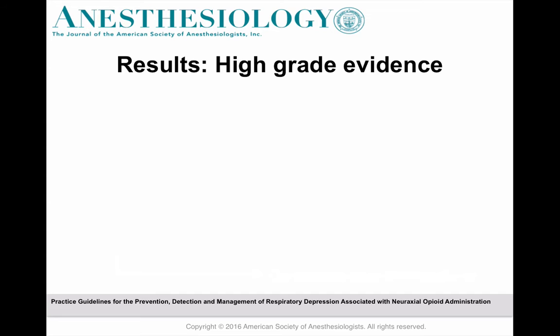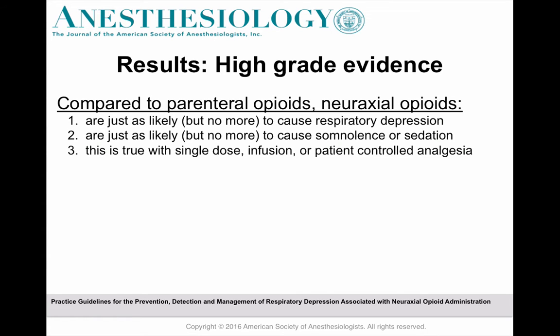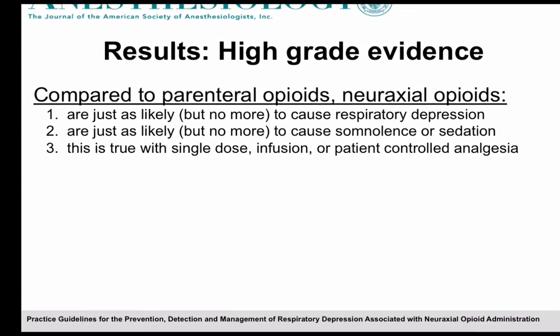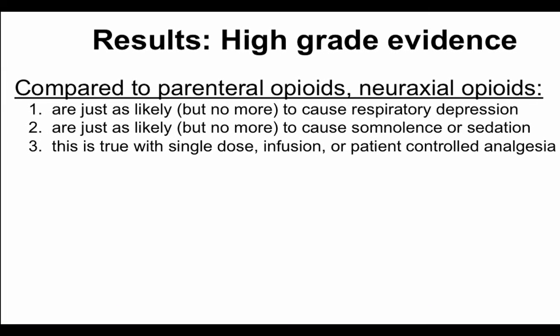Let's begin with the results of this particular update, where high-grade evidence is available to support the recommendations. The first is a comparison of parenteral opioids with neuraxial opioids. High-grade evidence suggests that parenteral opioids are just as likely, but no more likely, to cause respiratory depression than neuraxial opioids, as well as somnolence and sedation. This is true with a single dose, an infusion, or patient-controlled analgesia — the risk is similar.